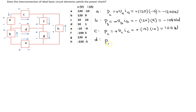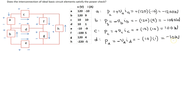For element D, power is voltage times current, P_D = V_D × I_D. For element D, the reference current is entering the terminal marked with a minus sign, so we use a minus sign here. Substituting the values gives minus 10 watts. Element D is supplying power because this value is negative.